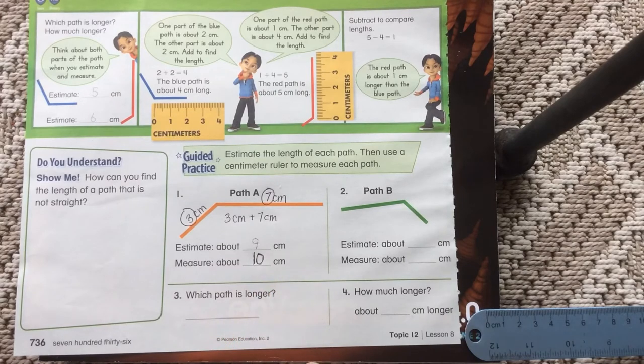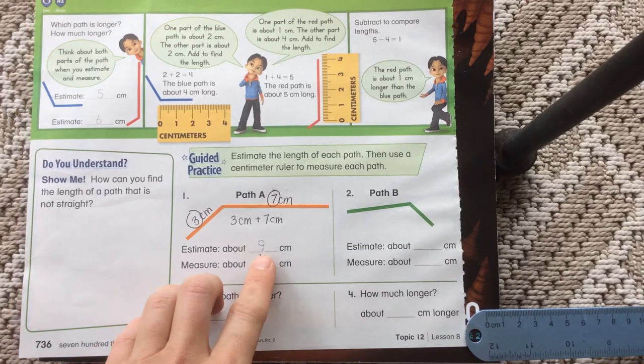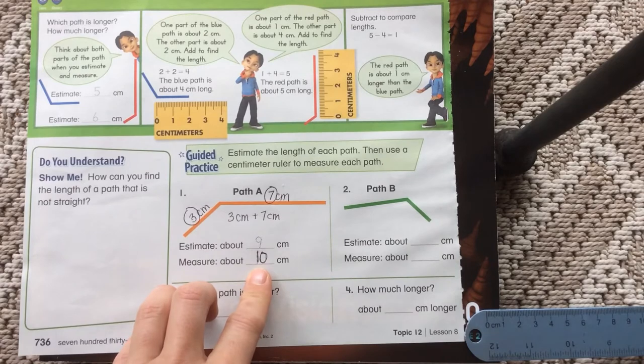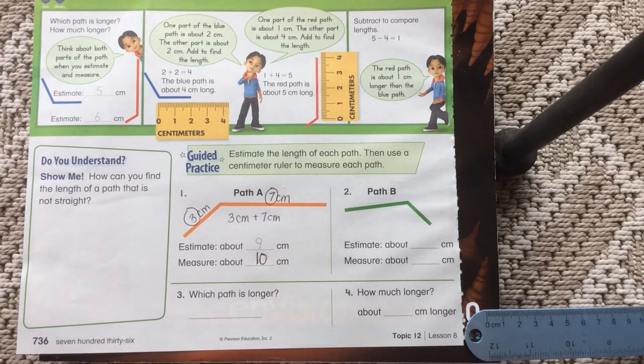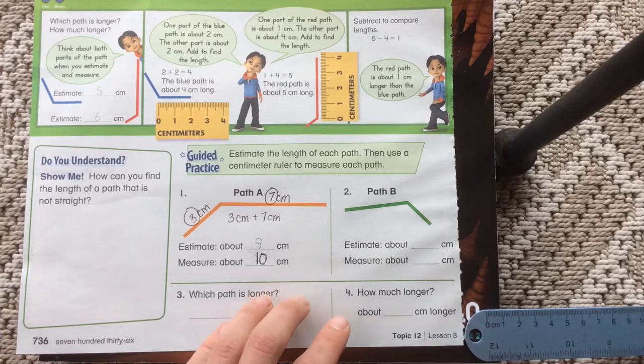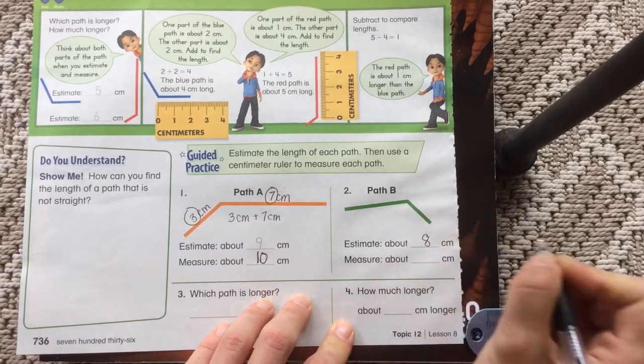So for path B, maybe based on path A, what do you think path B is going to be? To me it looks shorter. So if I know that path A is 10 centimeters, maybe about two centimeters shorter is my estimate. So I think it's about eight centimeters.